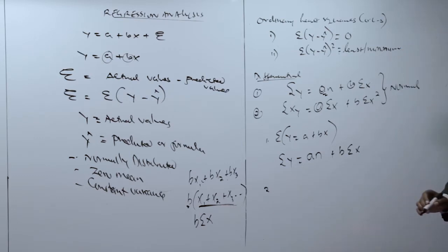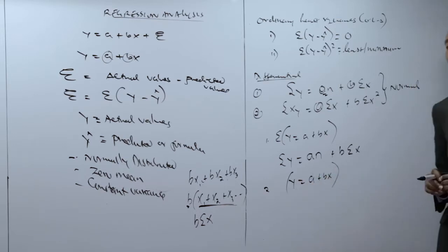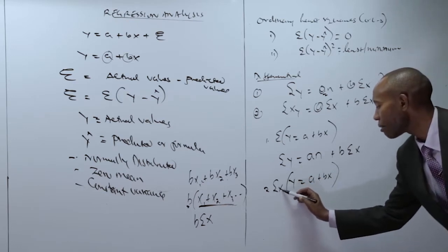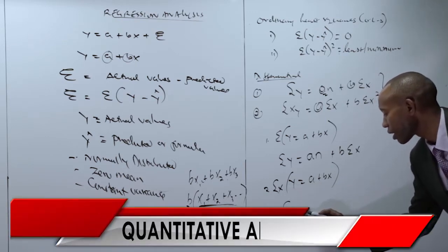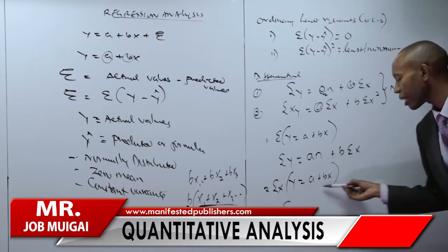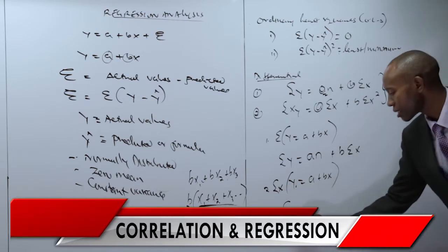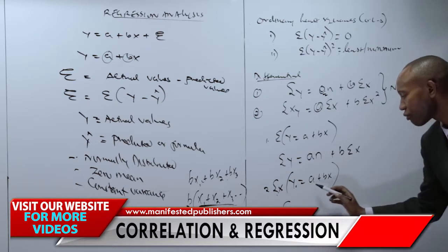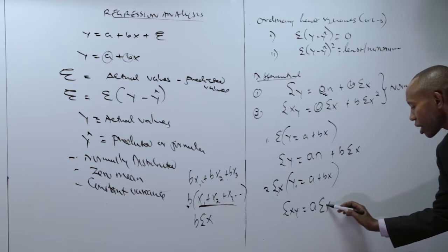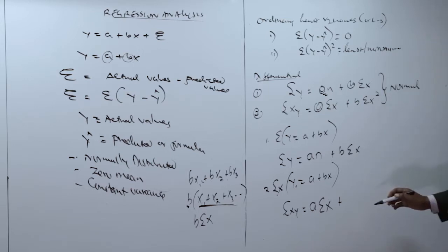To determine equation two, we take the original equation y equal to a plus bx and multiply every term by x, then sum. The sum of x multiplied by y gives us the summation of xy. The summation of x multiplied by a gives us a times the sum of x. And x multiplied by bx gives us bx squared; summing that gives us b times the summation of x squared. That is how we derive the first and second normal equations.